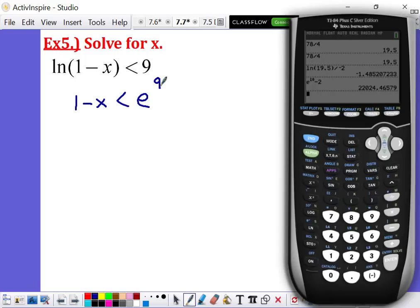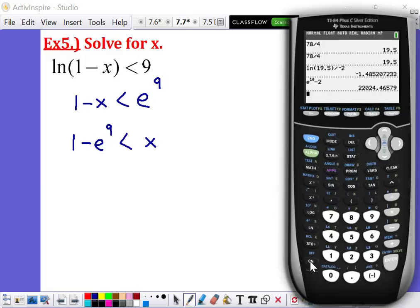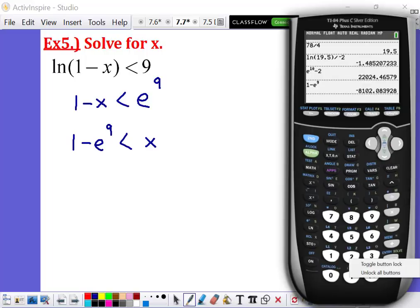Okay, so if we wanted to solve for X, I would add X to the other side and then subtract E to the 9th to the left-hand side. So if I isolate X, I rearrange everything. This is where I'm at. Now, please remember that E is a real number. It means the same thing every time you use it. So E to the 9th is also a real number that we can evaluate. So I have 1 minus E to the 9th. And I get negative 8,102.084.